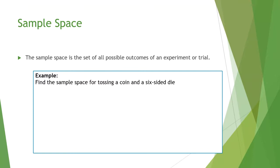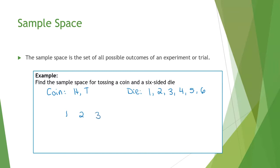As an example, find the sample space for tossing a coin and a six-sided die. A coin has two possibilities: heads and tails. A single die has six sides that go from one to six. We've got two choices for the coin and six choices for the die, which should give us twelve choices altogether. I usually do this by making a table, going across with all the choices for rolling a single die, and then the choices for the coin: heads and tails.